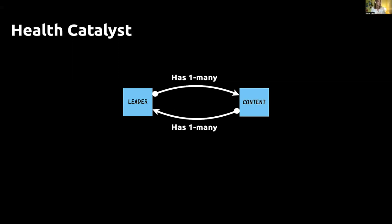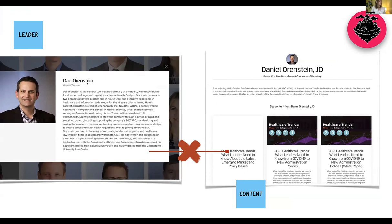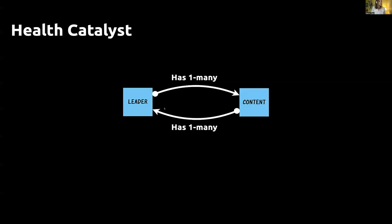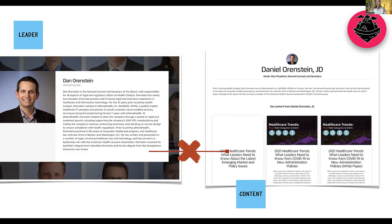Here's another example. Health Catalyst is an organization I recently worked with. On their marketing page, they've got leaders and content. Dan Orenstein has a big, beautiful bio — he's general counsel. If you go to a different part of the website, you can see another bio of Dan with all the content he's created. You can click on a content piece and see Dan, but you can't get back to his full bio. The mental model connection — that leaders within Health Catalyst create content — is completely disconnected.